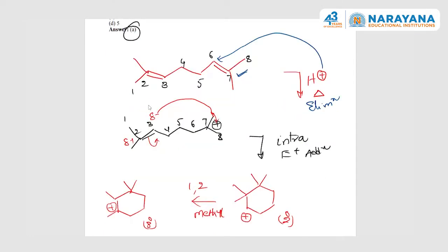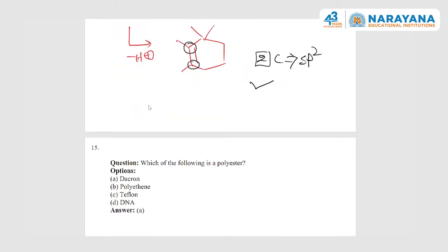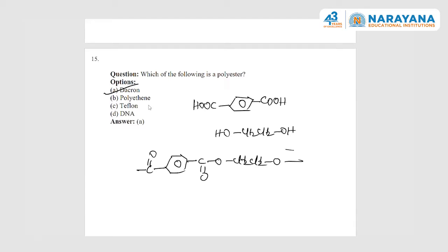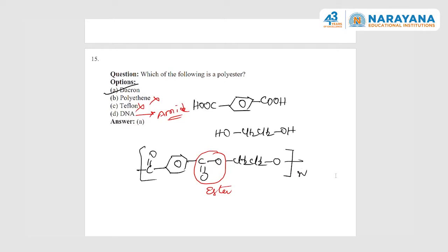Next question about polymers: the monomer of Dacron is a copolymer formed from terephthalic acid and ethylene glycol. These condense to give a structure with an ester functional group, making it a polyester. This ester unit repeats, hence it is a polyester. Poly(vinyl chloride) is an addition polymer, Teflon is also addition, DNA contains an amide/peptide bond — not ester. So option A, Dacron, is the correct answer for the polyester.